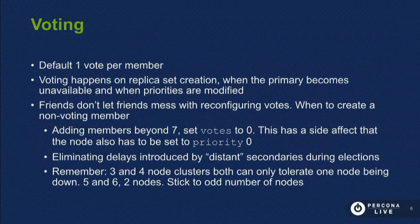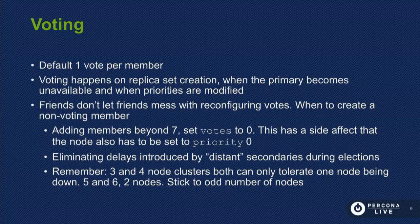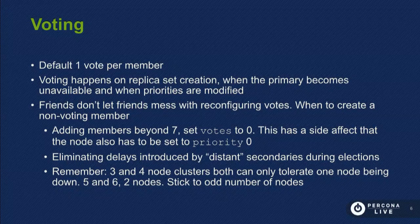Getting into voting: MongoDB has one vote per member by default. Voting happens when you first create a replica set, when the existing primary becomes unavailable, and when you modify the priorities of existing members. You do not normally want to mess with the votes of a member — use priorities and things like hidden for what you need. Messing with votes could have unintended effects, especially because selecting primaries during failover is based on that. Be very careful if you really think you need to modify votes. Votes is just a configuration setting — rs.conf will show you that your members all have one vote, and you can modify it quite easily.